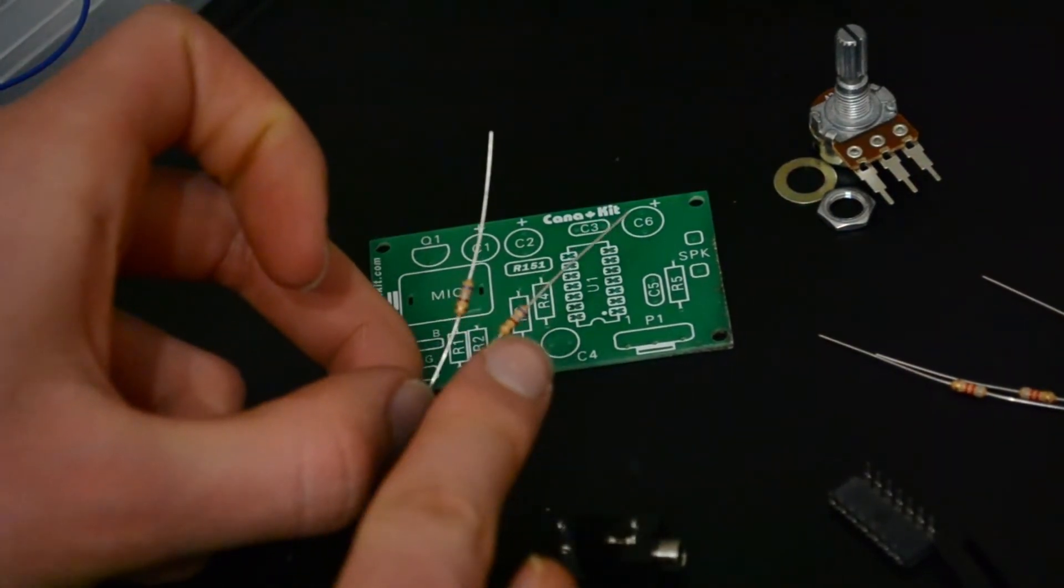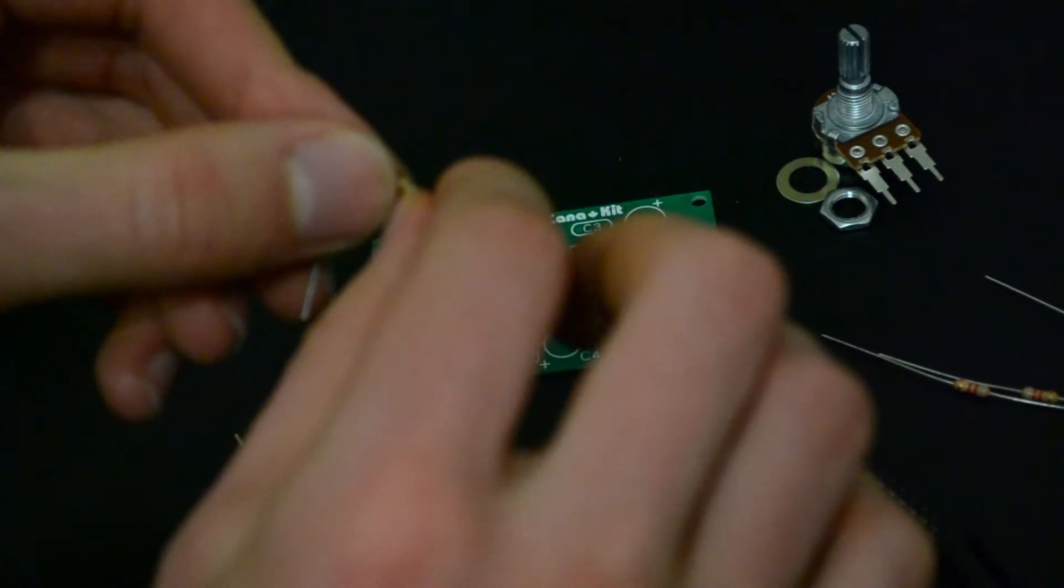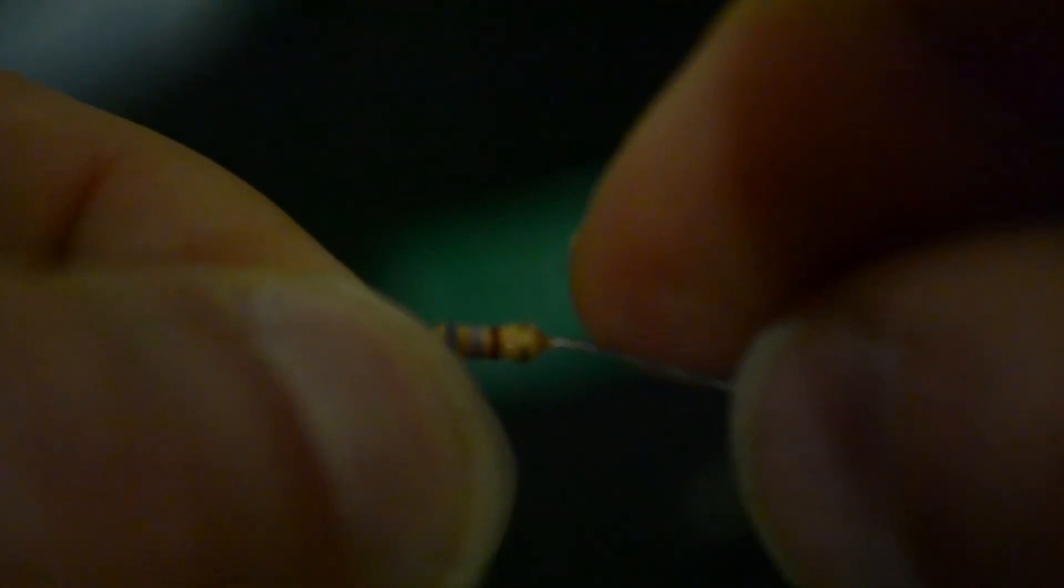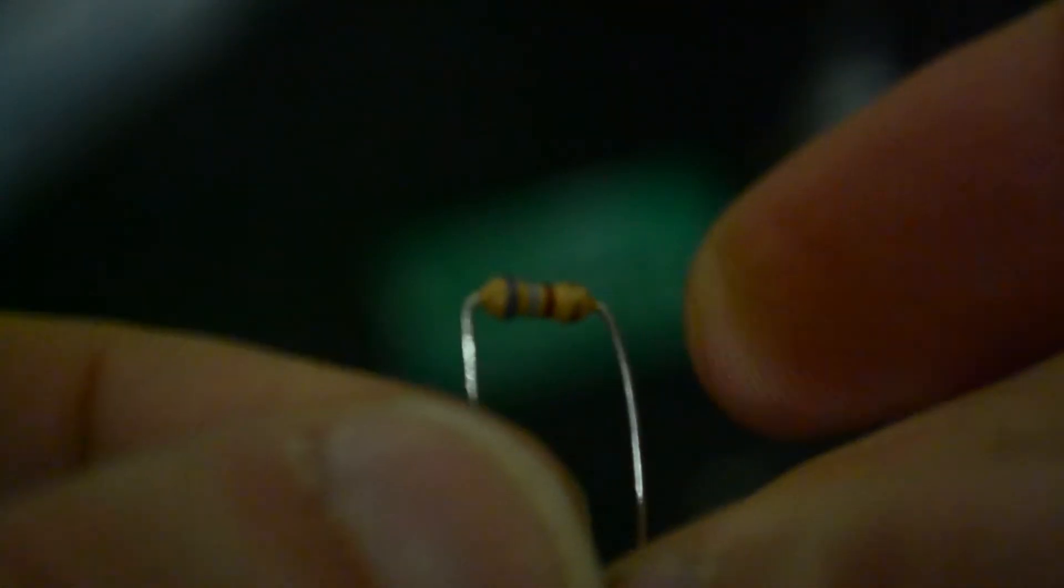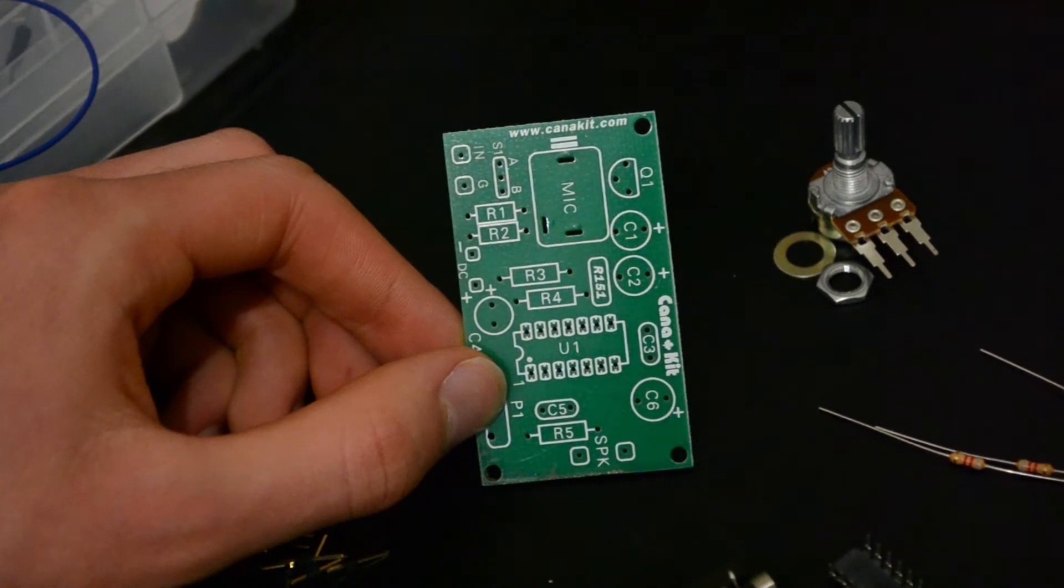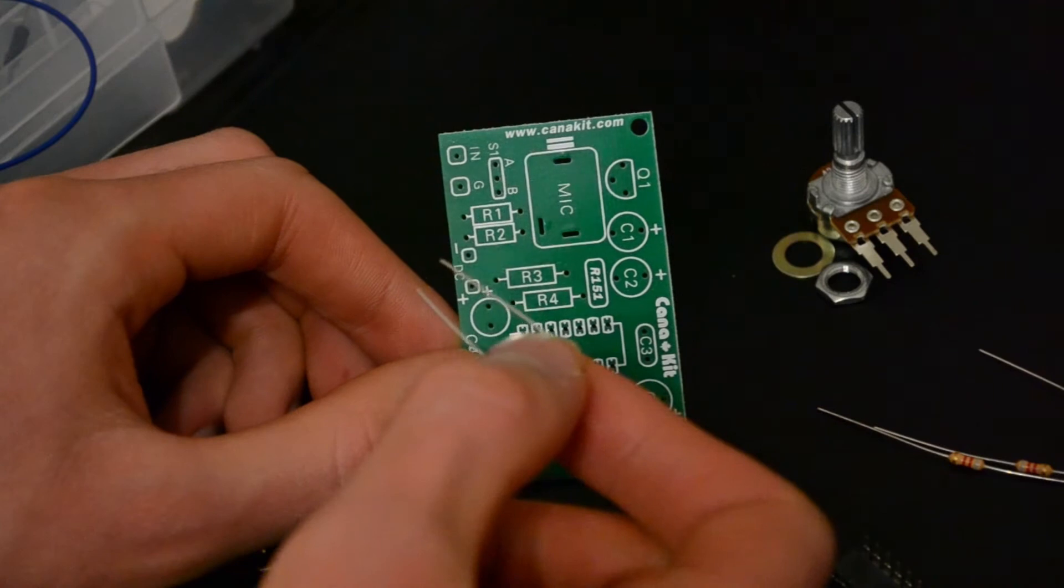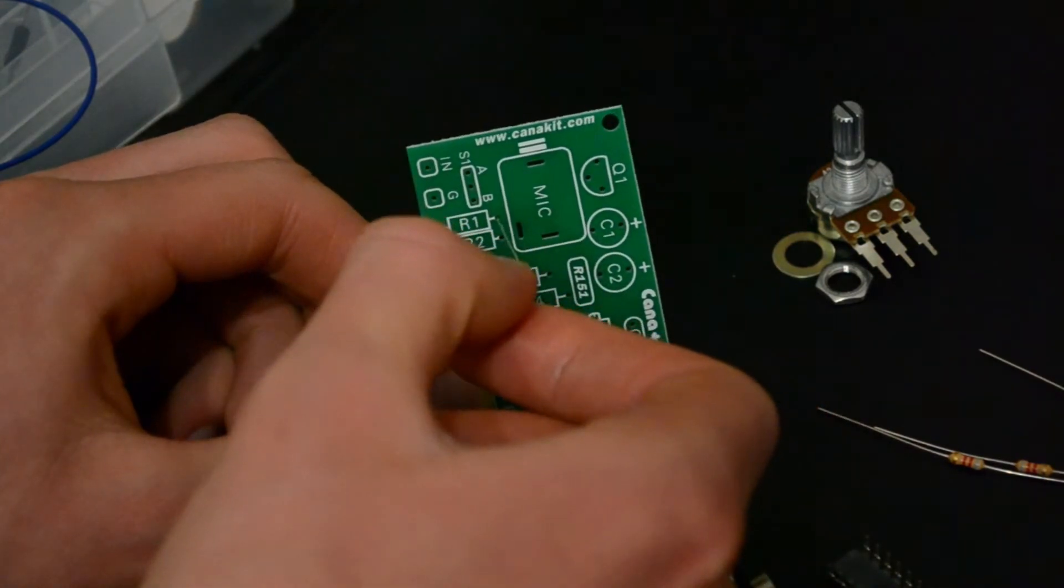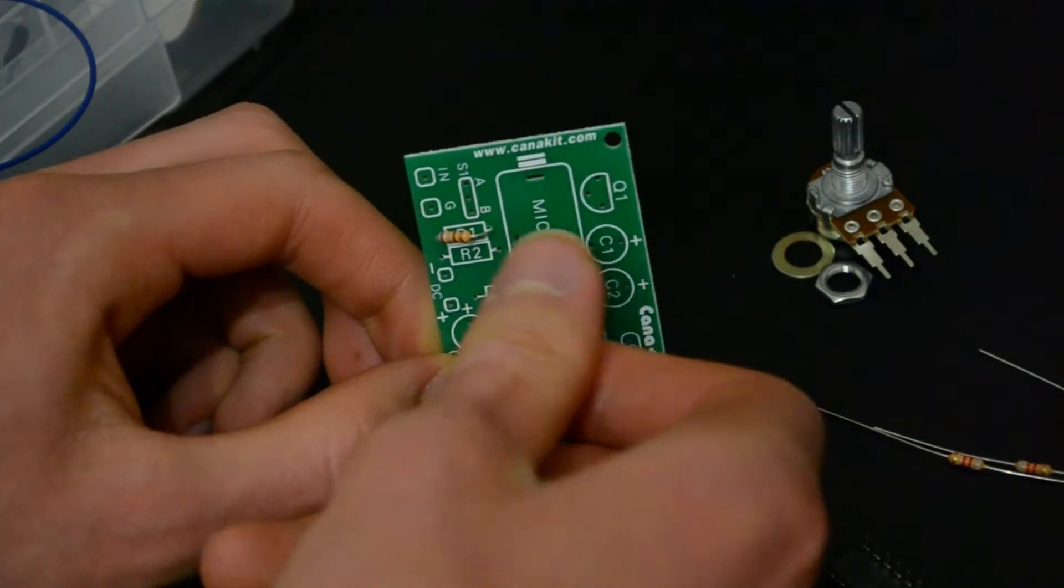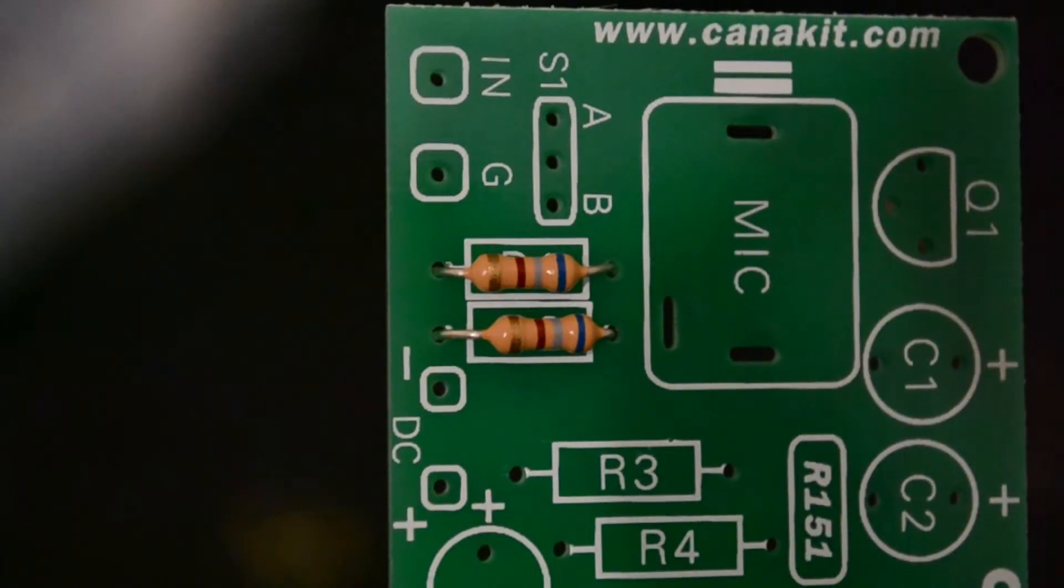Okay, these are R1 and 2. So, what we want to do is bend the leads of the resistors down at 90 degrees, right next to the body of the resistor. There we go. Should be good enough. And then we want to insert it into the location for R1. We can see the position for R1 and R2. So, we'll insert those in there. Now, because it's a resistor, it doesn't matter which way you put it in.